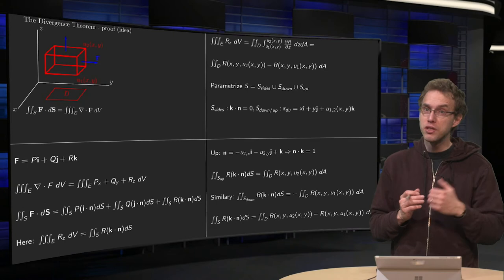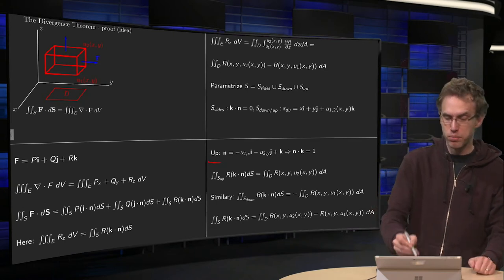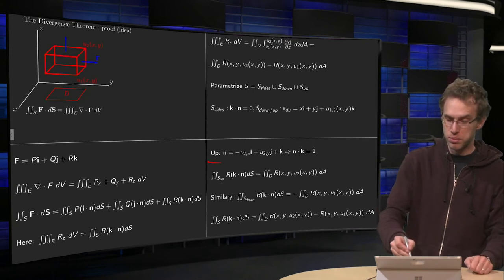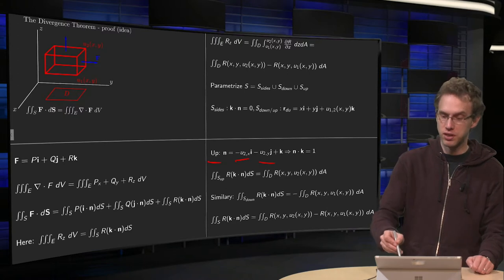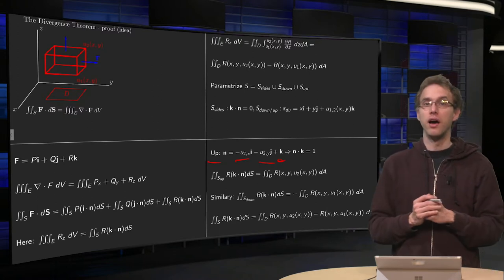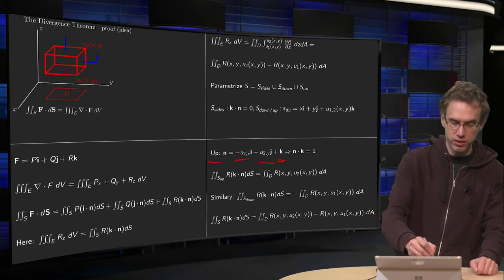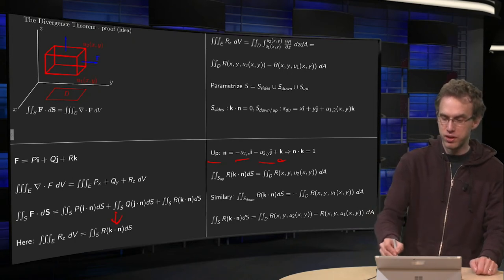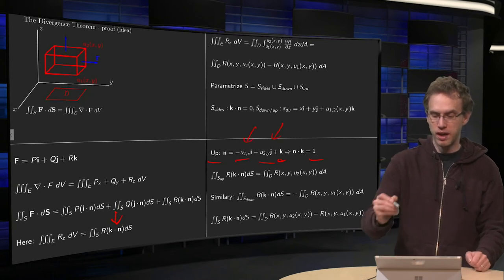Now then we use this parameterization, for example on the upper part, to compute the normal. That's the standard. So the normal becomes minus u2 differentiated with respect to x, minus u2 differentiated with respect to y, plus k. Now if we take the inner product with n, which we need over here, we see that we just get 1, because those two terms cancel out.